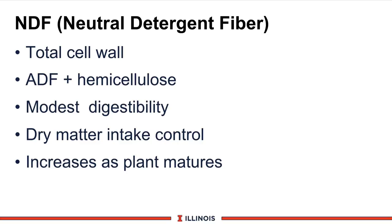A second fiber fraction related to energy is neutral detergent fiber (NDF), which includes all the cell wall — both ADF and hemicellulose. Hemicellulose can be 60 to 70% digestible; corn bran is a good example. So NDF should always have slightly higher digestibility and energy content than an ADF-only fraction. NDF also controls dry matter intake, also known as fill factor — too much NDF and the cow simply can't eat as much feed.